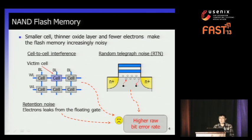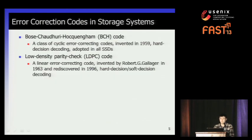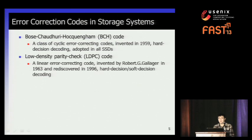All these noise sources have the same consequence: the raw bit error rate in NAND flash memory becomes higher and higher. In SSDs, we use error correction code to control these errors. BCH code, named after its inventors, is adopted in all SSDs today. But as the raw bit error rate keeps increasing as technology scales down, LDPC code has attracted much attention because it has a much stronger error correction capability than BCH code.